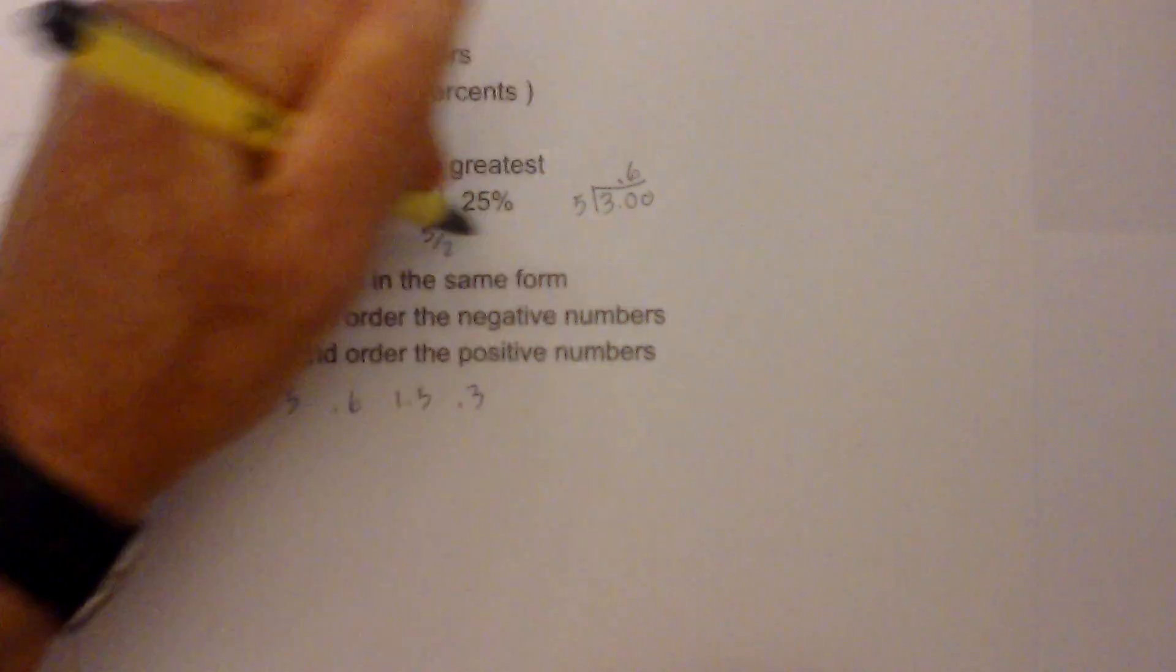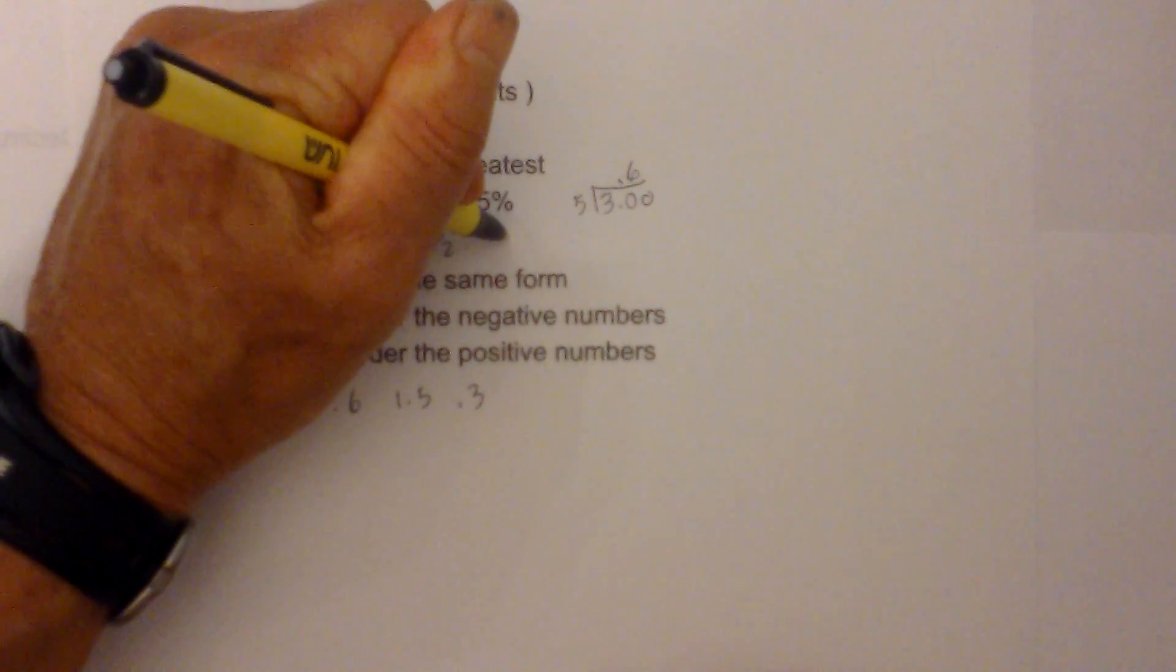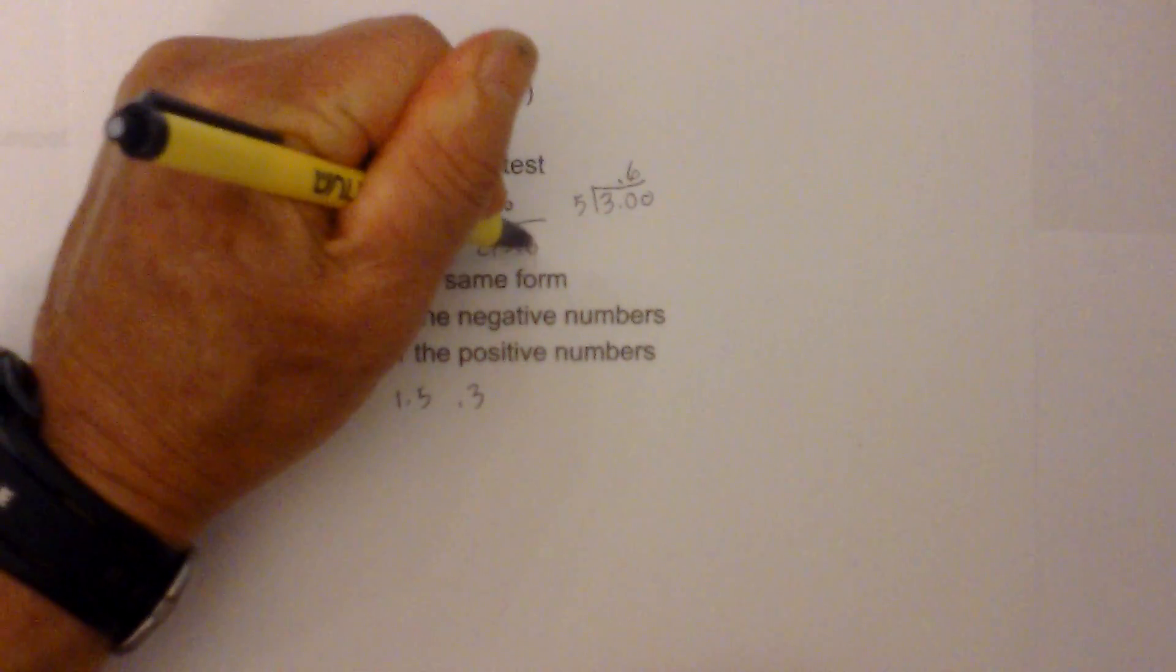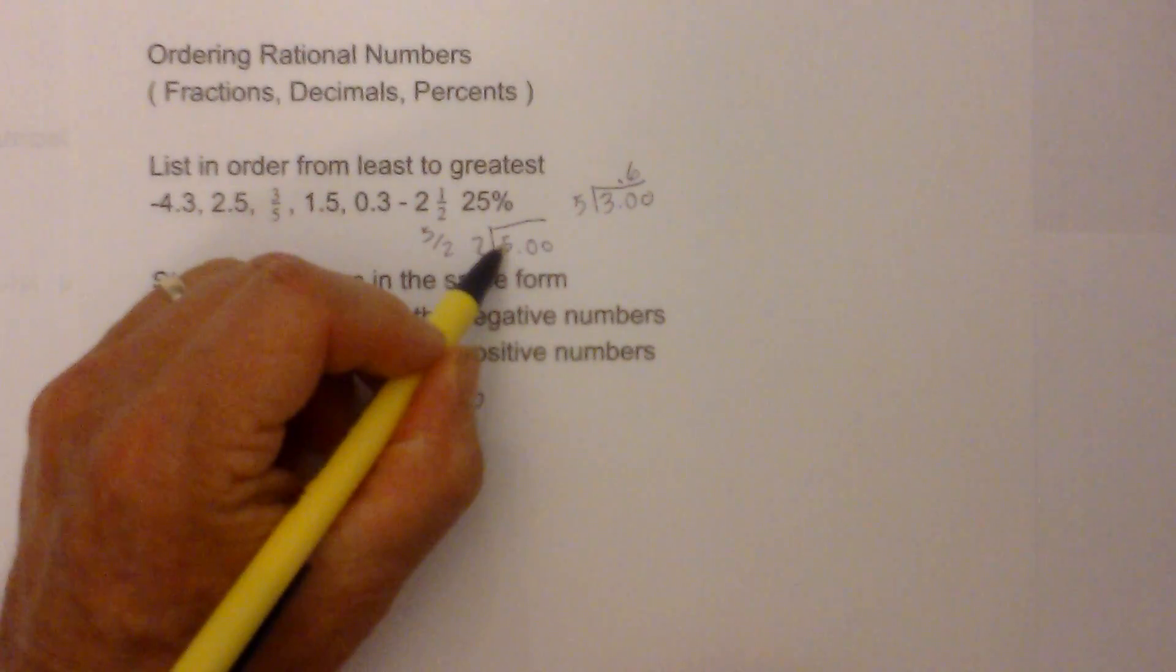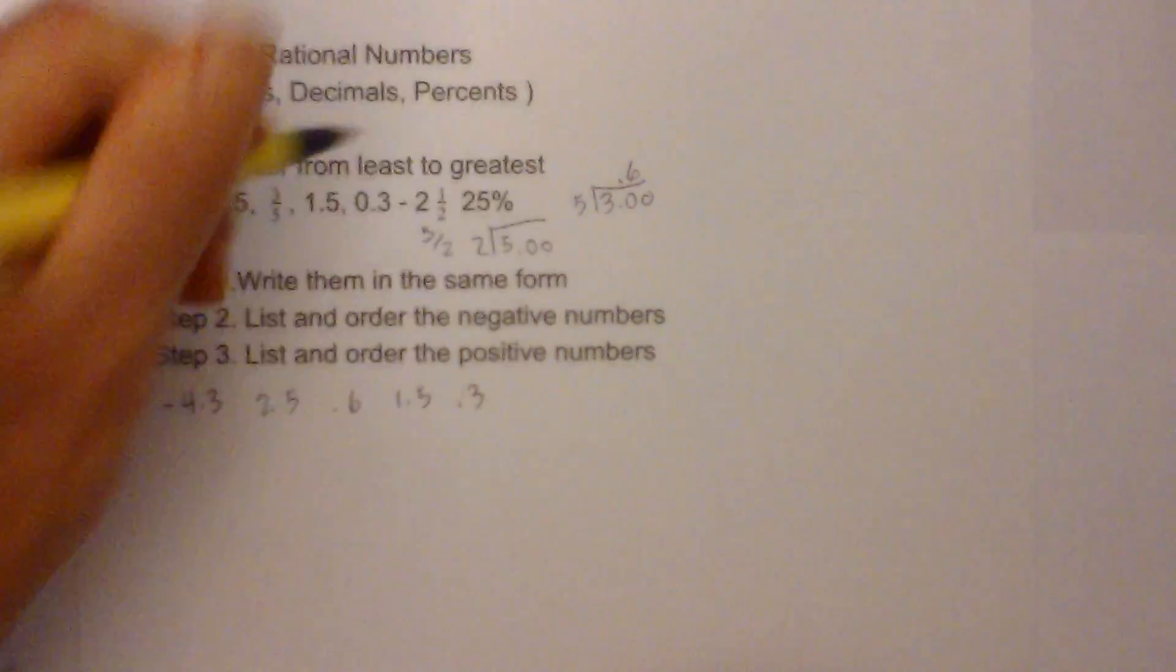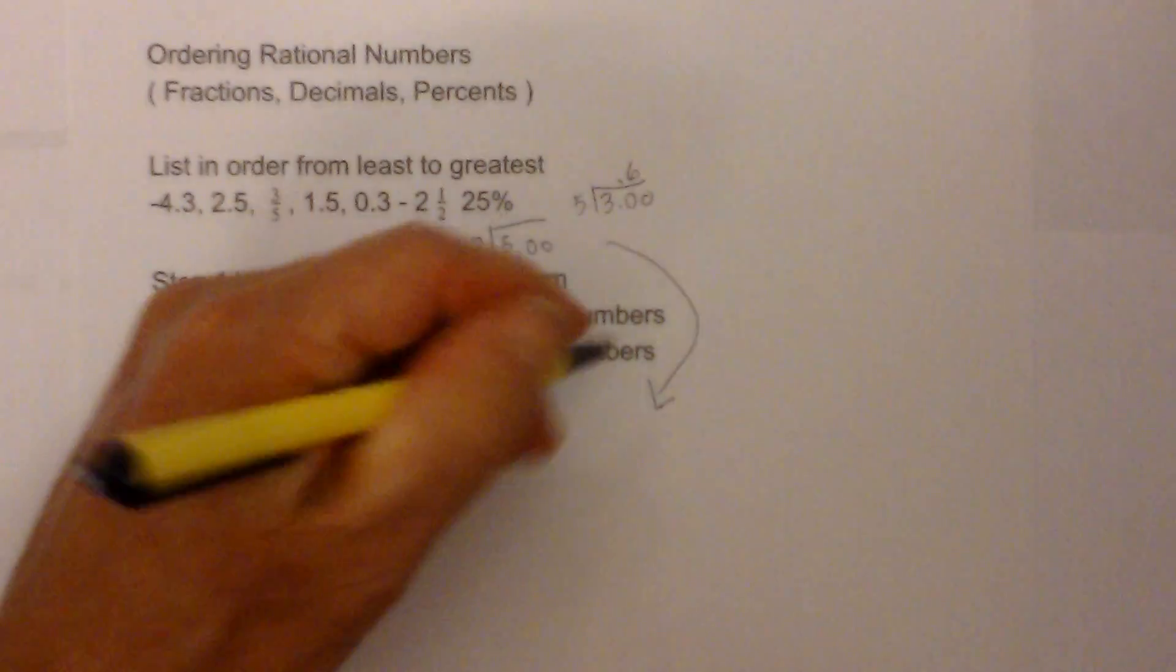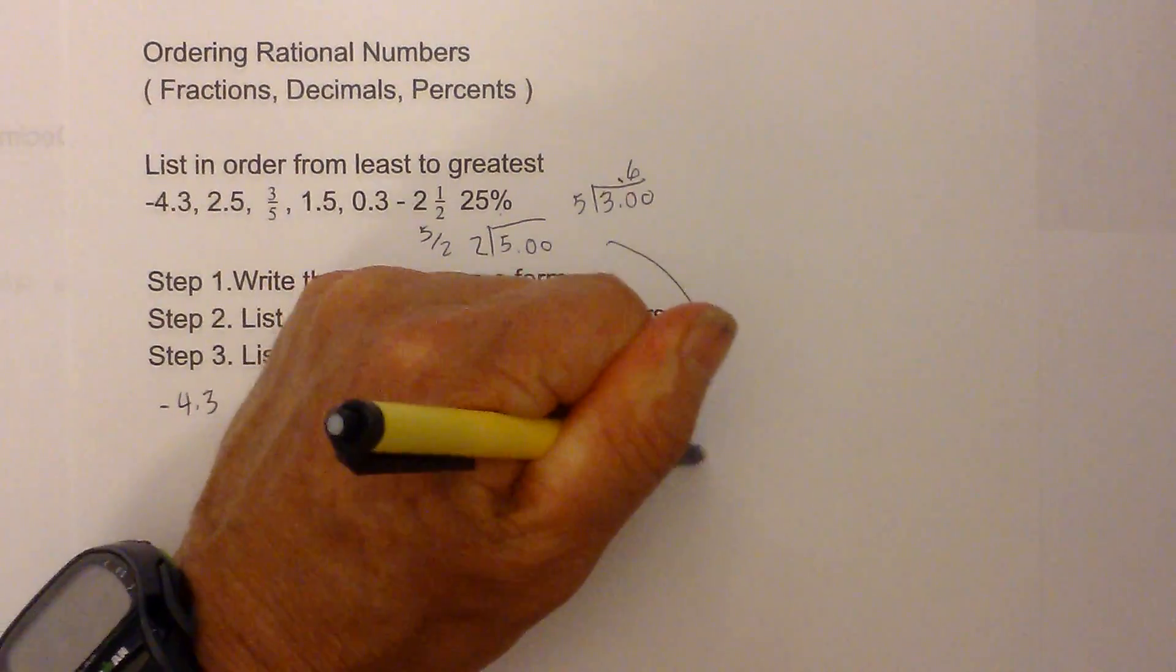So it will be 5 divided by 2, remember to move the decimal. 2 goes into 5 two times, I am going to move this down right here. It is a little messy, so I have 5 divided by 2.